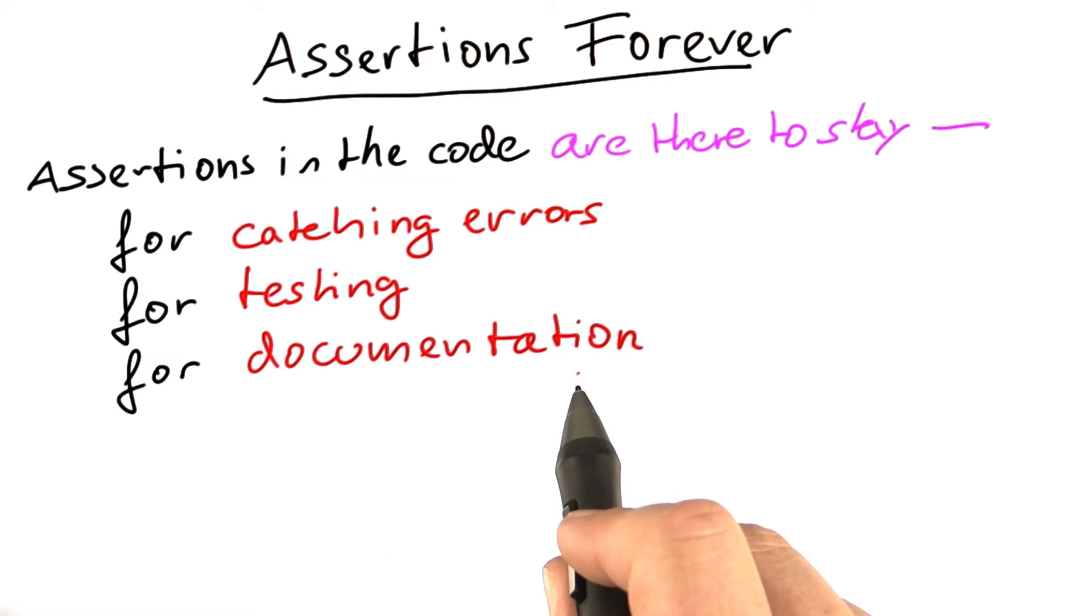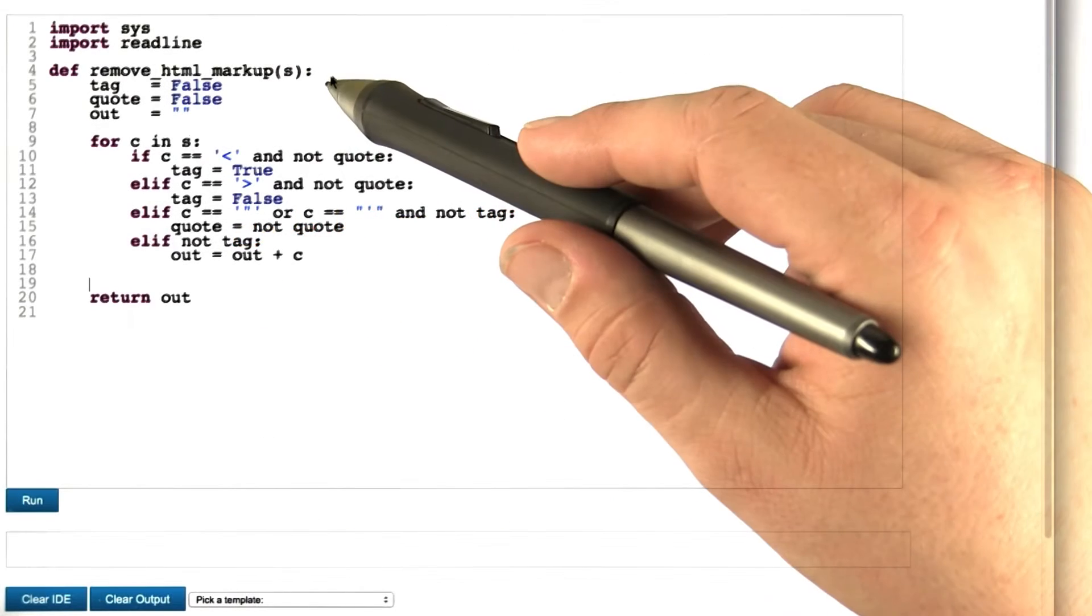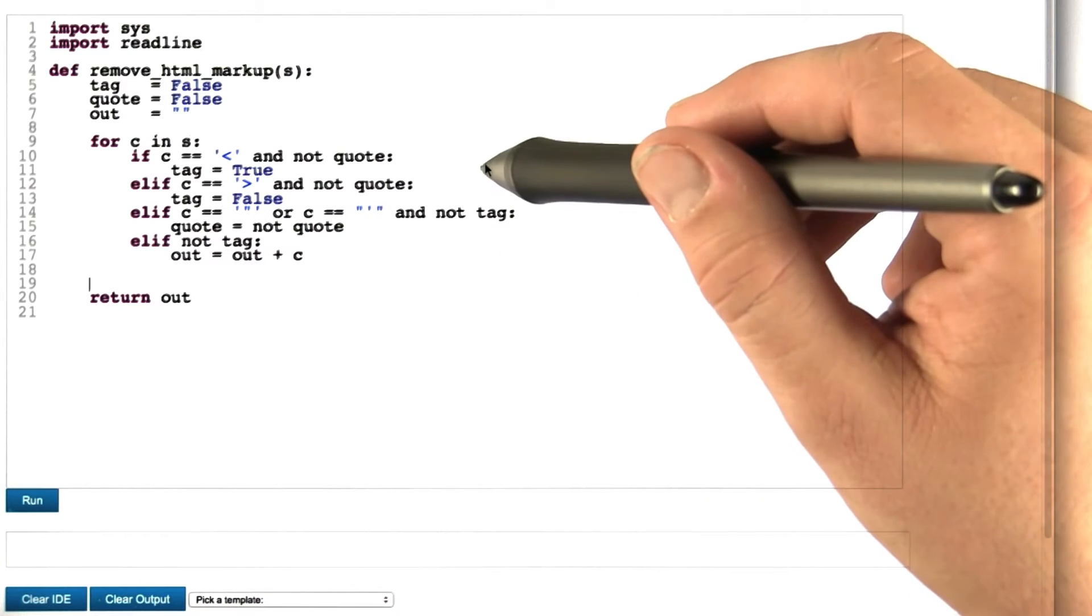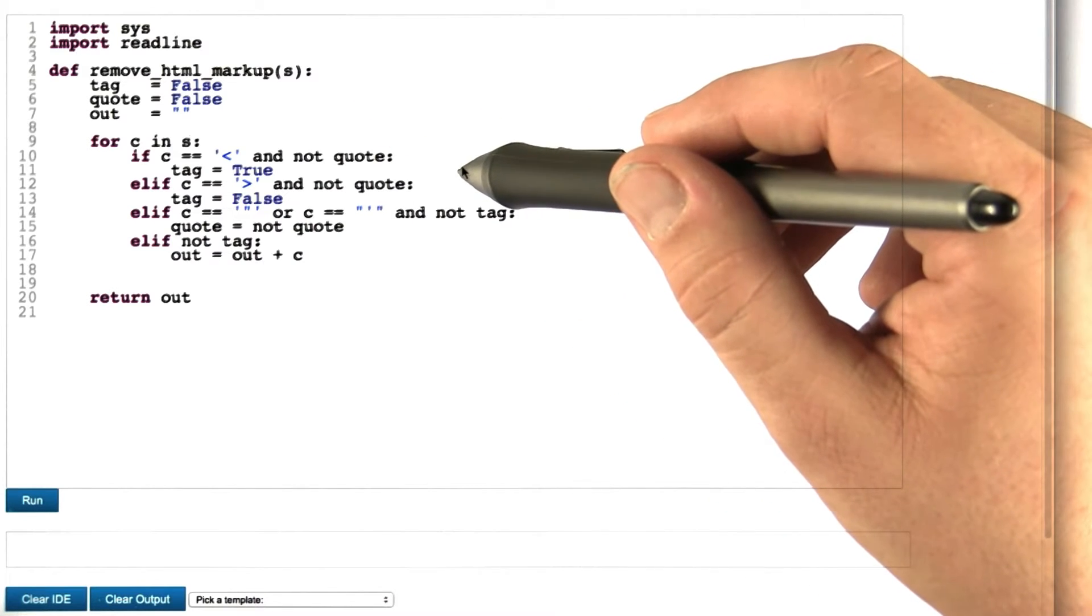Now let's apply assertions to another program, an old favorite of ours, our buggy HTML stripper from the first unit. So here again we have a function to remove HTML markup, which you already know from the first unit.